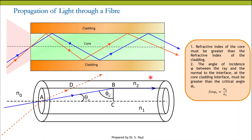Second, at the core-cladding interface, the angle of incidence φ between the ray and the normal to the interface must be greater than the critical angle φc. Only if the angle of the incident ray is greater than φc will it undergo total internal reflection and propagate through the core of the optical fiber.